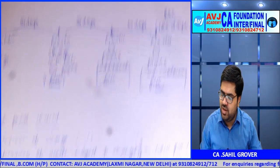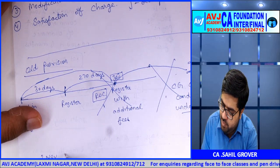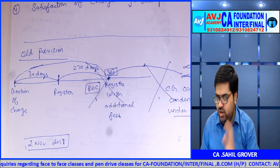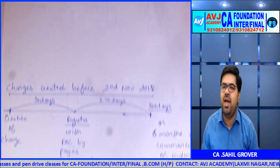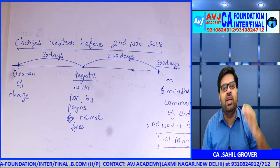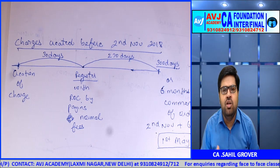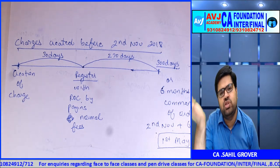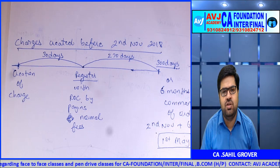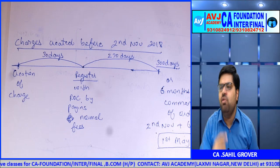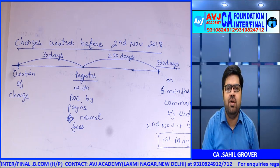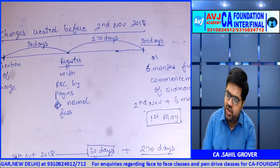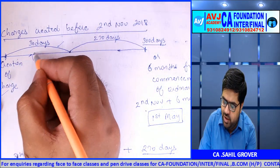These provisions apply to charges created on or after 2nd November 2018. 2nd November 2018 is important because that is the commencement date of the Companies Amendment Ordinance. For charges created before 2nd November 2018, separate transitional provisions apply. The main rule of 30 days from creation remains unchanged — the change came in the provisors. For pre-commencement charges: register within 30 days from creation (normal rule of Section 77), or within 300 days from creation with ROC condonation (270 additional days).